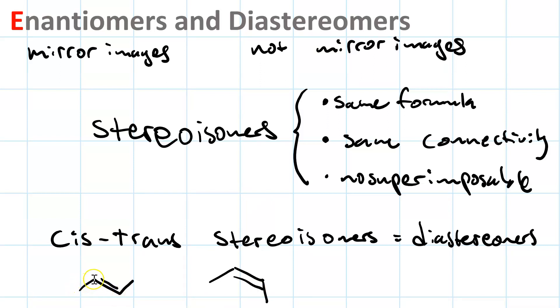And they both have a methyl group connected to a double-bonded carbon connected to another double-bonded carbon connected to a methyl group. And yet they are non-superimposable. They are also not mirror images.